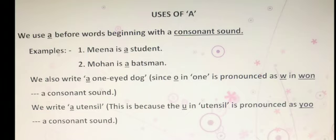Next, we write 'a utensil.' This is because the U in 'utensil' is pronounced as a 'yu' sound, which is a consonant sound. The letter U is a vowel, but it gives a consonant sound here. So we use A, not AN. This is the uses of A.